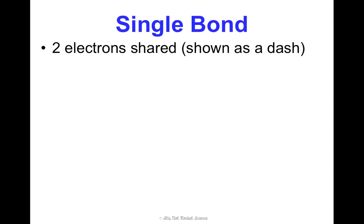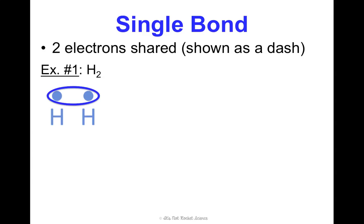A single bond is two electrons shared, and we show it as a dash in our drawing. We're going to go back to concept one where we learned about electron dot diagrams — we've only used them so far to show ionic bonds, but now we're going to use them to show covalent bonds. First example: the compound H₂, which is hydrogen gas. You draw your electron dot diagrams for the elements, and instead of showing an arrow going from one to the other, we use a circle around the electrons to show that they share. Then you rewrite and replace the circle with a dash to show that the dash represents the two shared electrons. In my class, I want you to draw both things — with the circle and the dash — so I know you really understand.